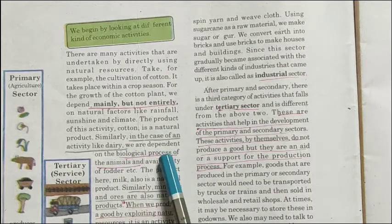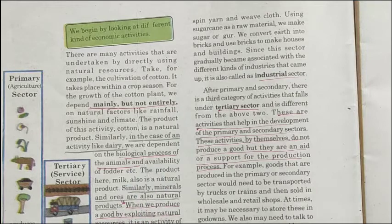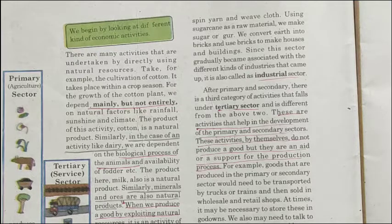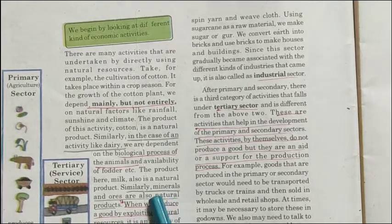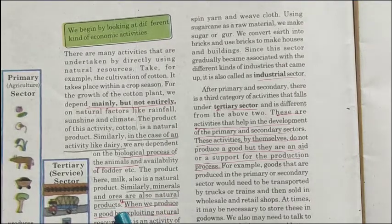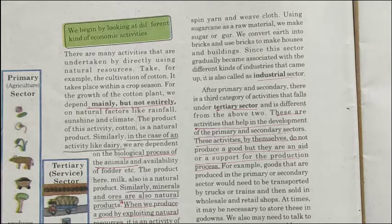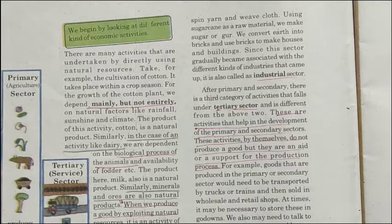Through cultivation, cotton is produced — cotton is therefore a natural product. Similarly, in dairy we depend on the biological process of animals and availability of fodder. The milk produced by the mother animal is a natural product. Similarly, minerals and ores are also natural products. So when we produce a good by exploiting natural resources, it is an activity of the primary sector.